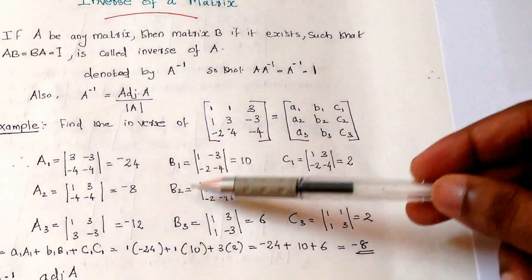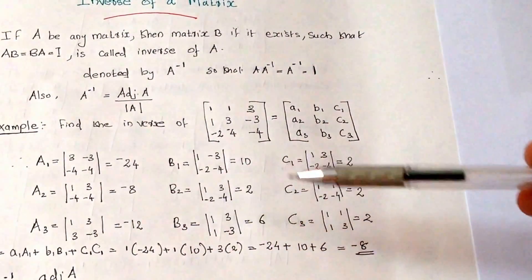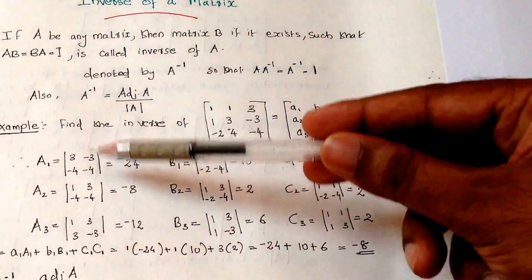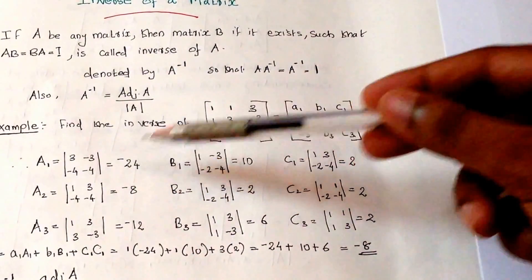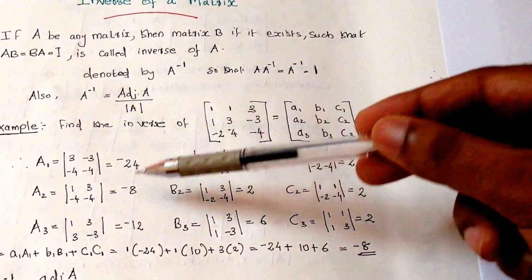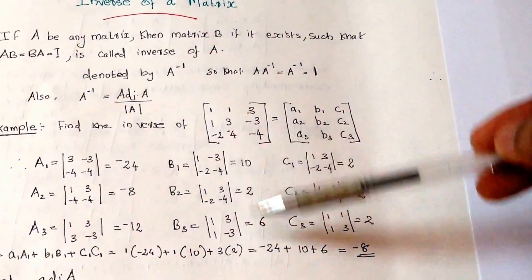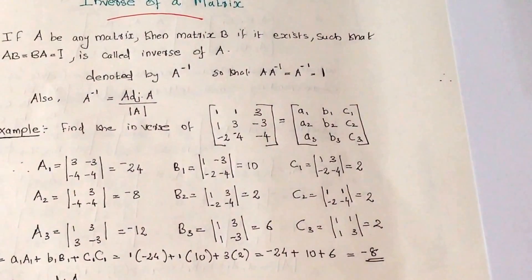Similarly, we will find A2, B2, C2, A3, B3, C3. And we will get the cofactors for each element. For A1 we got minus 24, A2 we will get minus 8, A3 we will get minus 12. So we will get a new matrix in their positions.